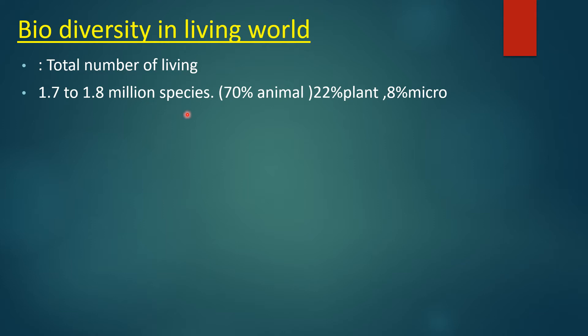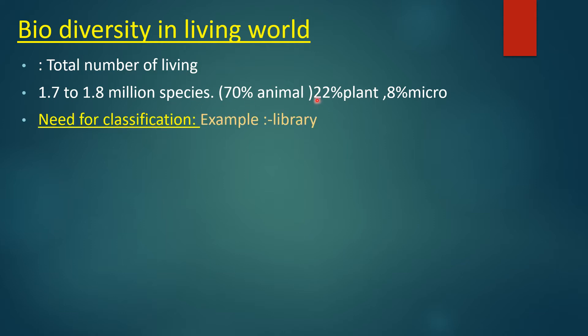अब यह सारी species shape, size, external structure, internal structure, habitat, morphological structure और color में variations show करती हैं. इसे ही हम Biodiversity कहेंगे.